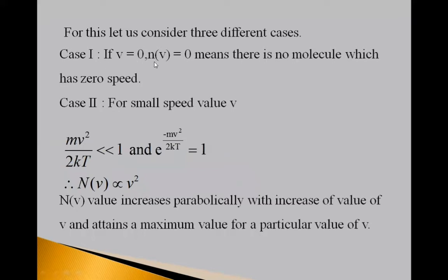If v is 0, N(v) is 0 means if velocity is 0, number of molecules having this 0 speed means there are no molecules having 0 speed. So, N(v) is 0.